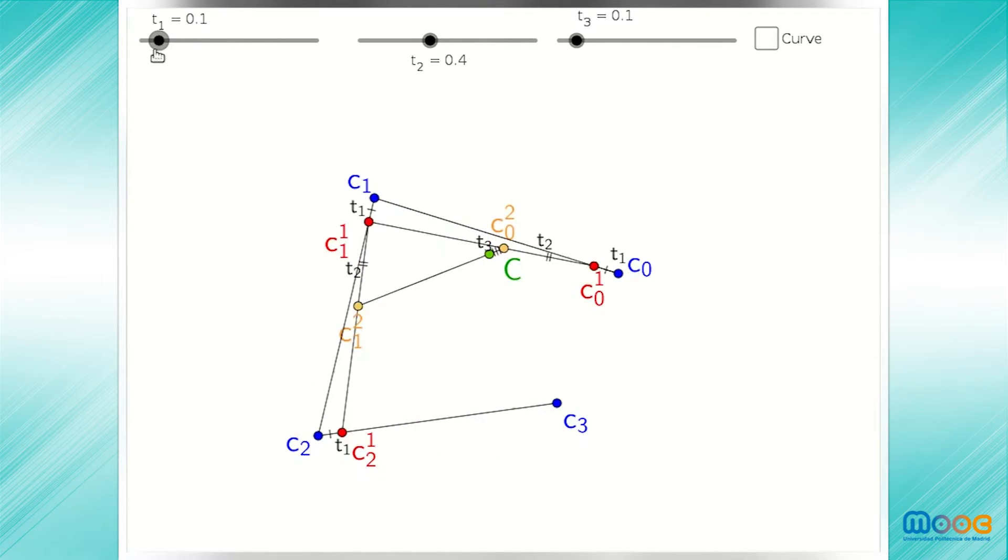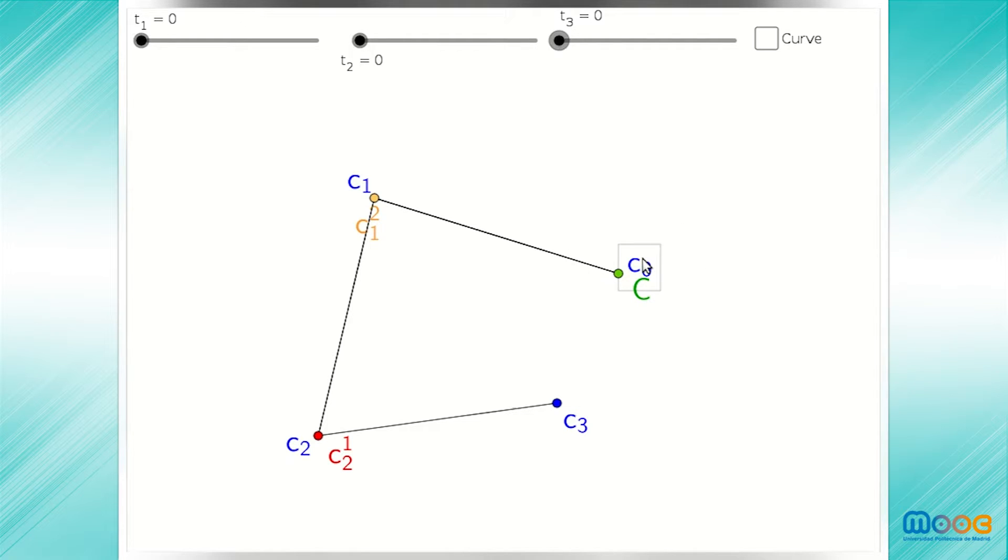If we take all of the proportions to be zero, this means we're always selecting the first point on each segment. The point that results in the end is simply the first control vertex. From the first step, we take the end point of the first segment, and then on the second and third steps, we take the first point of the resulting segments. What we obtain is the first control point and so forth.